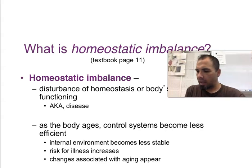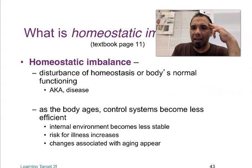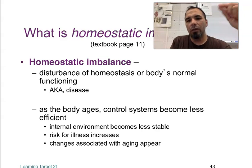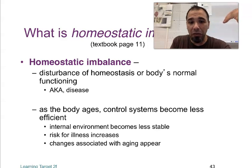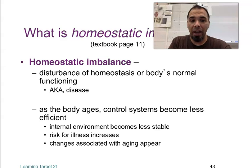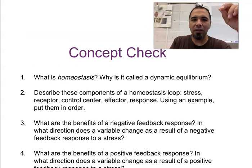So, what is an imbalance? A homeostatic imbalance is basically a disturbance in homeostasis — it's also known as a disease. As you get older, your control systems become less efficient. So I'm old, so my body is less efficient. And so, as you age, your risk for illness increases. Change associated with age appears — like gray hairs and stuff like that. Your body's ability to maintain homeostasis kind of slows down.